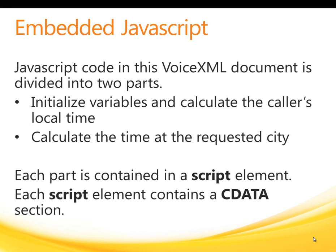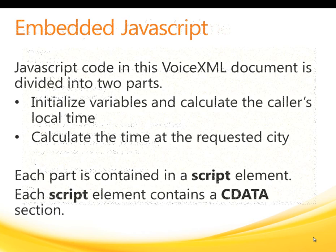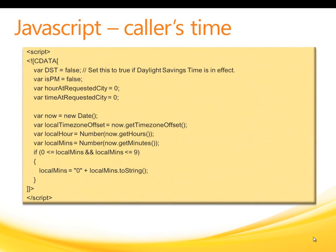The VoiceXML document contains two blocks of JavaScript code. The first section initializes some variables and calculates the hour and minute portions of the time at the caller's computer, as well as the time zone offset. The second block calculates the time at the city specified by the caller. Much of the code in the first JavaScript block is taken up with declaring and initializing variables. One of these variables, dst, is a boolean variable that should be set to true if daylight savings time is in effect; otherwise, dst should be set to false.